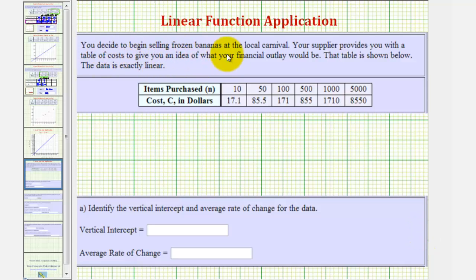You decide to begin selling frozen bananas at a local carnival. Your supplier provides you with a table of cost to give you an idea of what your financial outlay would be. That table is shown below, here, where n is the number of items purchased, and c is the cost in dollars.